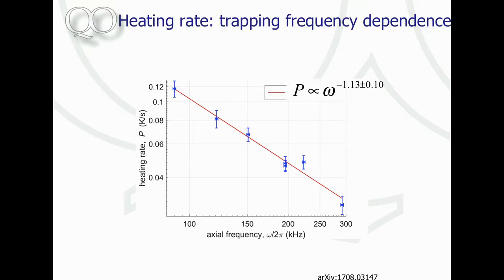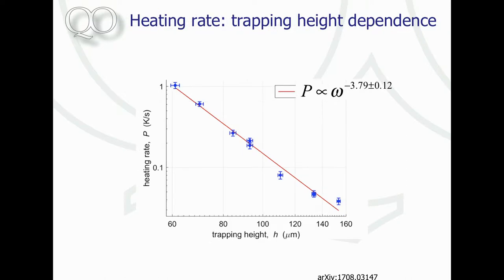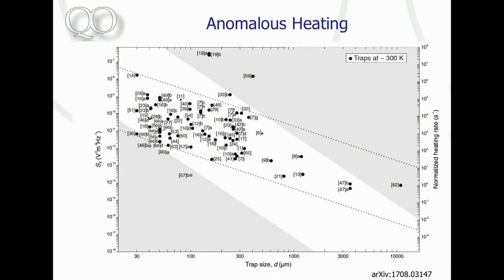Jumping right to the results: we measure the heating rate as a function of the trap frequency and find a certain exponent. Then we measure the heating rate as a function of the trapping height — a unique measurement that has never been done before, even though anomalous heating has been around for decades — and we measure an exponent of minus 3.79.